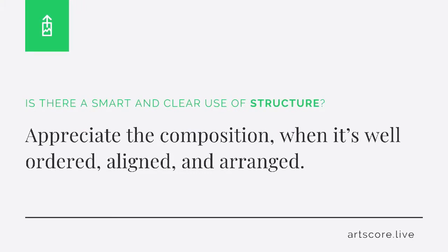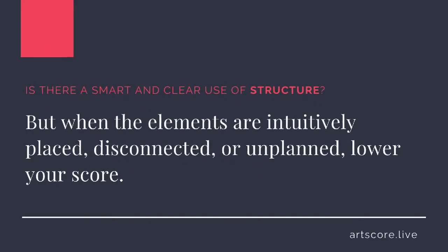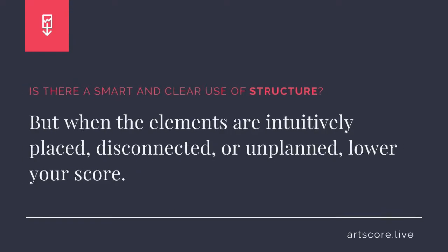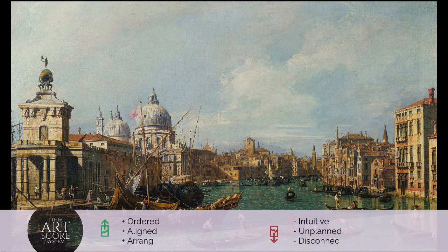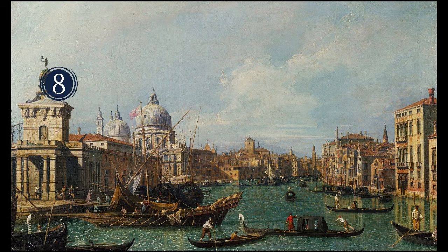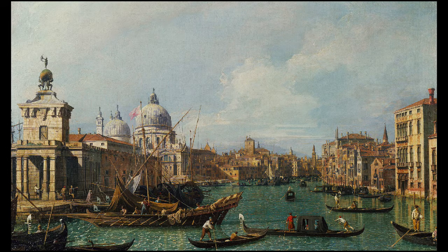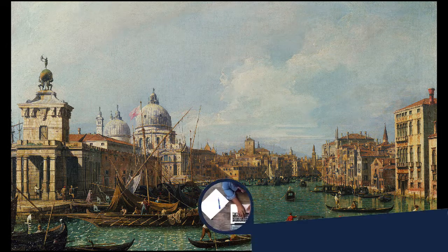Structure. Is there a smart and clear use of structure? Appreciate the composition when it's well-ordered, aligned, and arranged. But when the elements are intuitively placed, disconnected, or unplanned, lower your score. I scored the arrangement an 8. I see how the elements are intentionally ordered and intelligently arranged. What's your score?